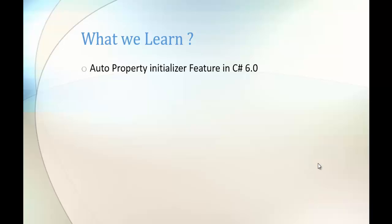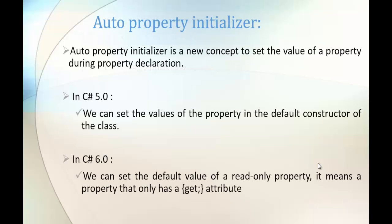Auto property initializer is a new concept to set the value of a property during the property declaration itself. Here we will see the differences — what's been added to C# version 6 and what was there in C# version 5.